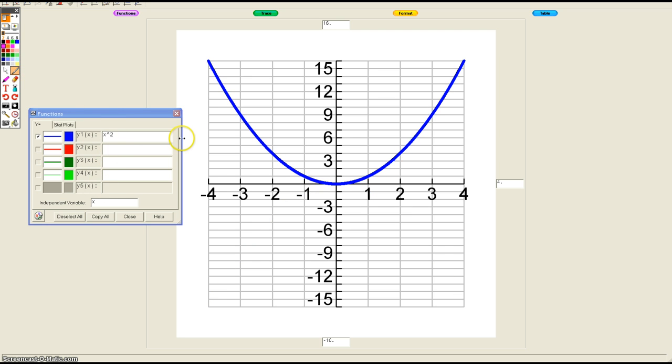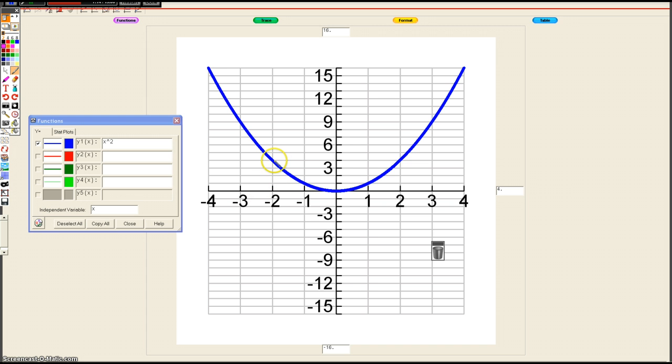You should see that the effect is that you're reflecting over the x-axis. When I plug in negative 2, I got 4 as an output, but if I take the opposite of 4, I get negative 4.